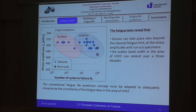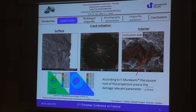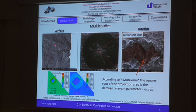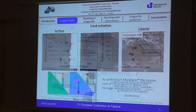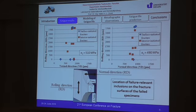Our investigation showed that we have two types of crack initiation: crack initiation at the surface and crack initiation in the specimen interior. But always, in both cases, crack initiation takes place at non-metallic inclusions. In order to characterize the size of inclusions, the area parameter introduced by Murakami was used.